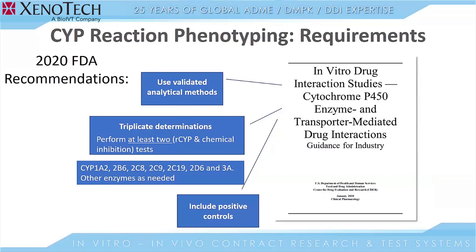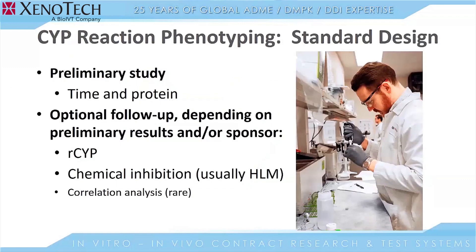So at Sekisui Xenotech, we have a standard design for a reaction phenotyping study that meets all the guidance requirements. Our reaction phenotyping study can be broken down into two phases. The first is the preliminary study, which we also call the time and protein. Once this is conducted, it's followed up with the additional recombinant CYP experiments and chemical inhibition experiments, and the chemical inhibition is usually carried out in human liver microsomes. Additionally, we offer a correlation analysis; however, requests for these are very rare, so I'm not going to go into the details of that today. But please be aware that it's a service that we offer if you so require it.